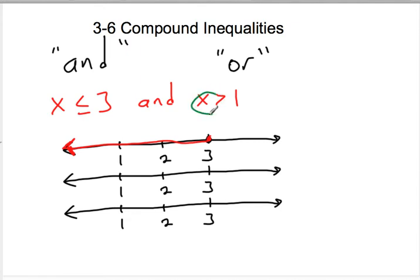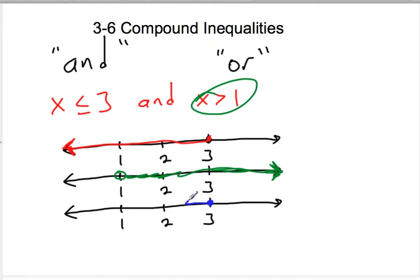For the second number line, in green, we have an open circle at 1 and shading to the right. When we graph a compound AND inequality, it's the intersection of both statements. So x has to be less than or equal to 3, making the boundary go left, and greater than 1 making the boundary go right. The intersection is the part in the middle, with a closed circle at 3, not the open circle.